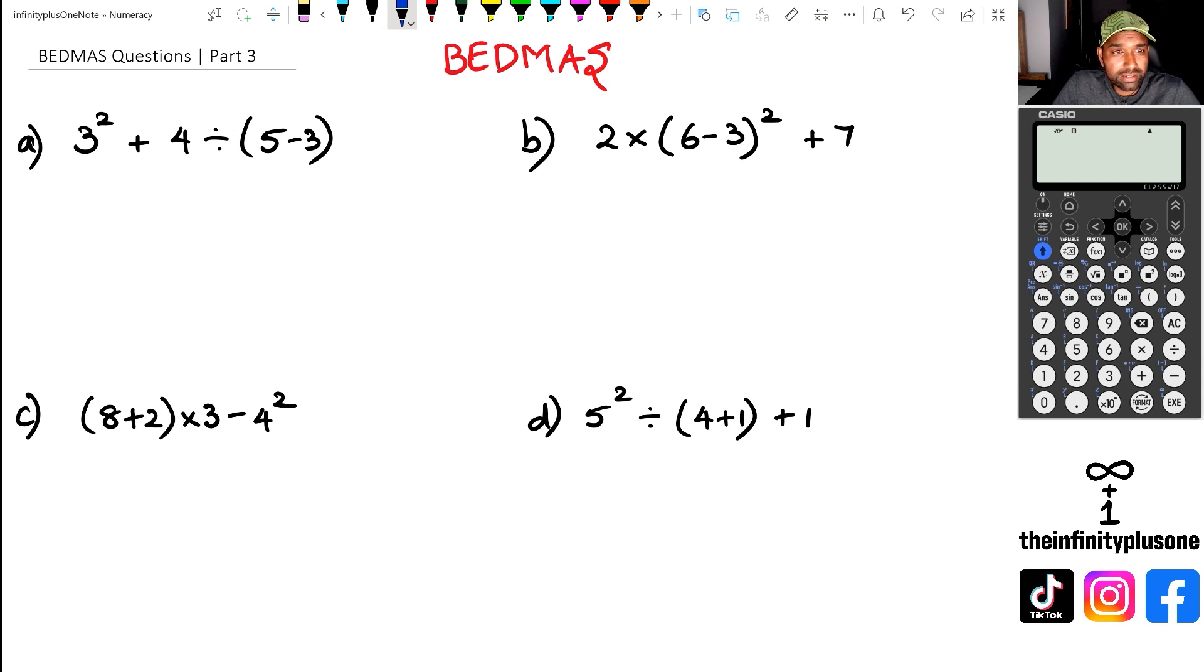Looking at question A, the first thing we want to be doing is the brackets. So if I do the brackets, that's five minus three, which gives us two. So I've got three squared plus four divided by two. Next, I do the powers, which is three squared. Three squared is nine. So I've got nine plus four divided by two. Then I do division. Four divided by two is two. And finally, the addition, which is nine plus two equals eleven.